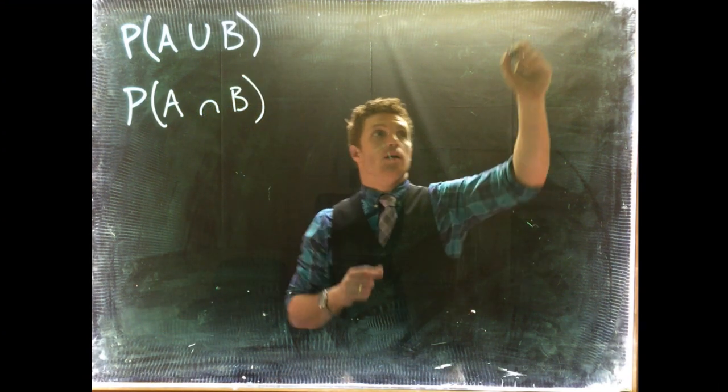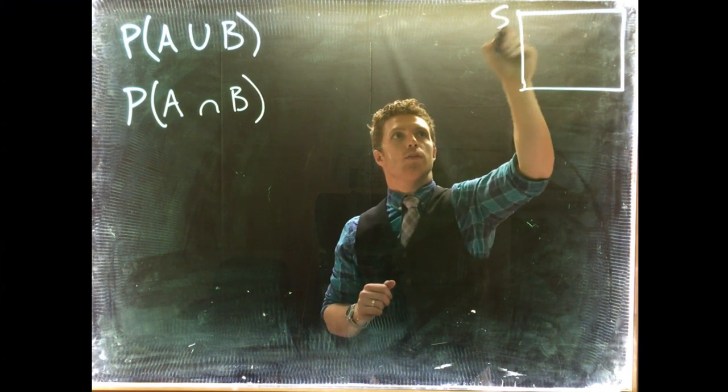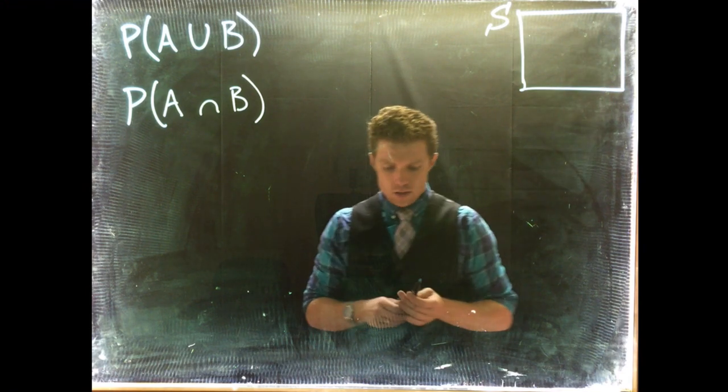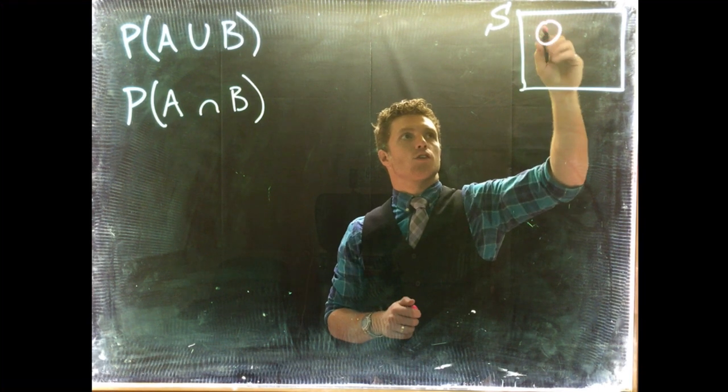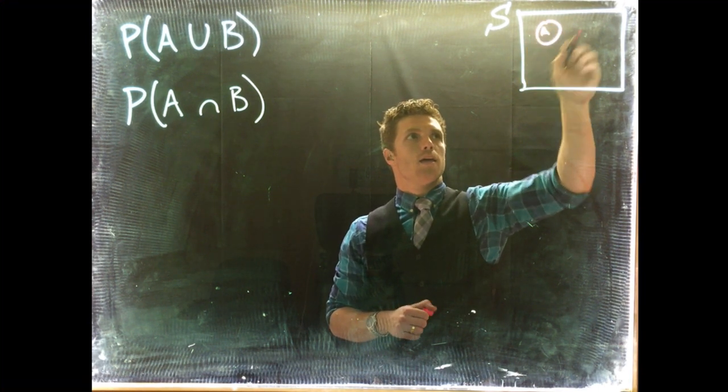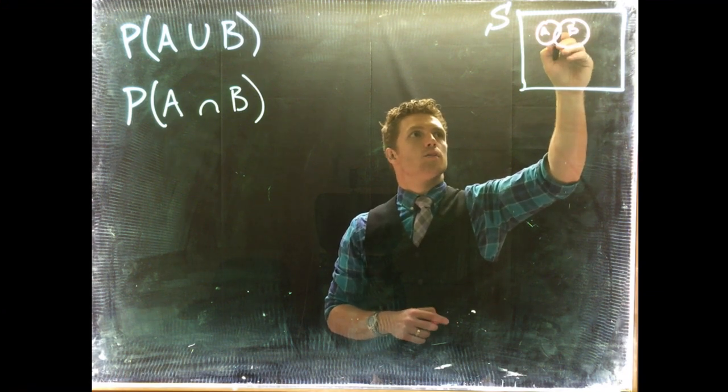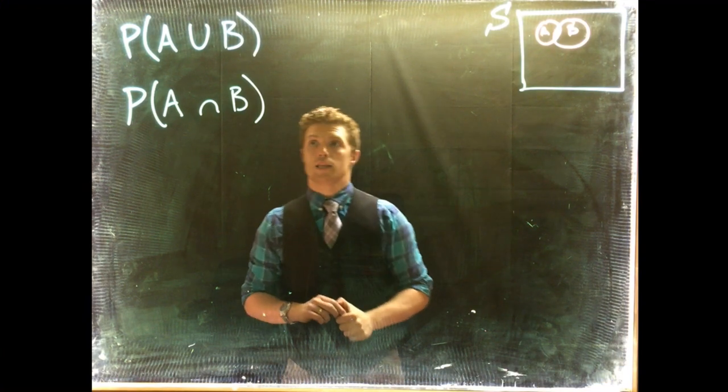So if we break it down into a quick picture, we know that our sample space is the whole box and individual events can be denoted by circles on the inside. We could have this be A and we can have this be B. So we know that there is some interaction or some overlap there between A and B.